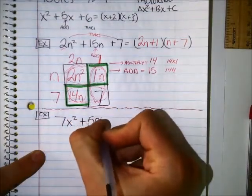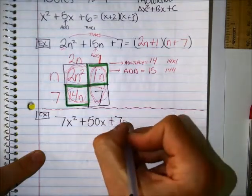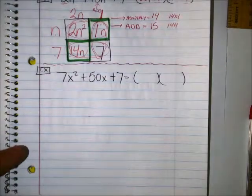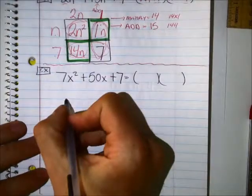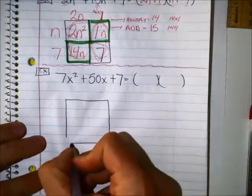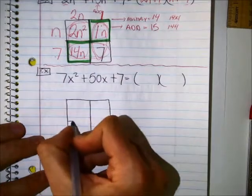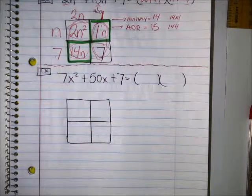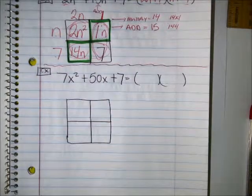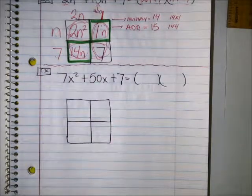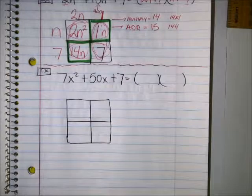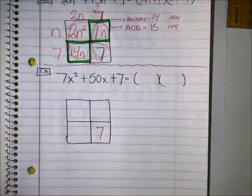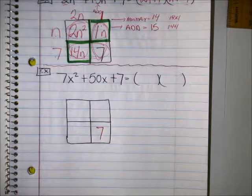7x squared plus 50x plus 7. I want to factor that into the two terms that it becomes. I'm going to draw a box. This is why I told you that even though you didn't use the box, you still have to know how to use it, because these problems here kind of require it. I'm going to start by filling in the two boxes that you already know. Brandon, what two terms could I fill into my boxes for this problem?